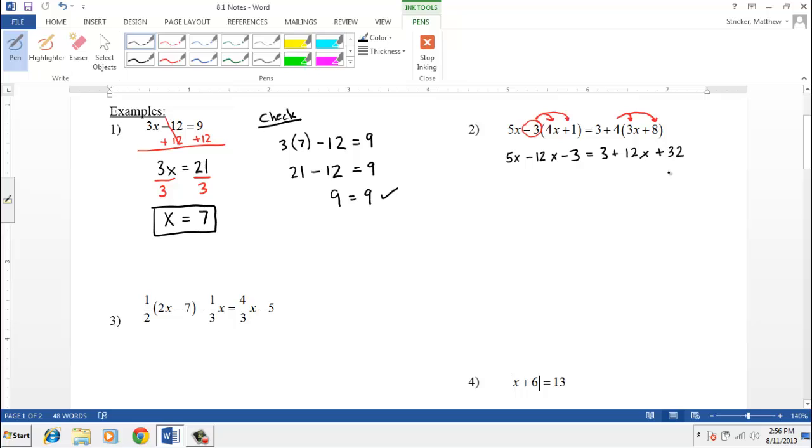So we've gotten rid of the parentheses. The next step, usually done, is to combine like terms on each side of the equation. So that means we need to combine the x's over here. And then on the right-hand side, we want to combine the numbers, the 3 and the 32. So when you combine the x's, we have negative 7x minus 3. And then on the other side, we want to combine the numbers, which gives us 35.